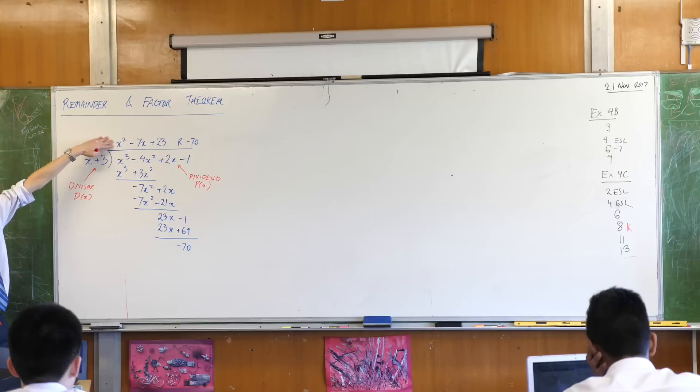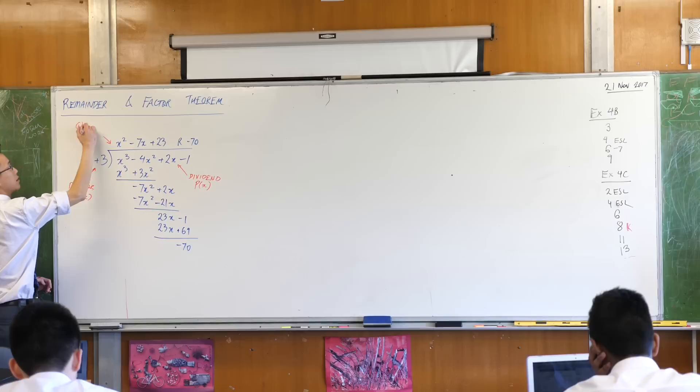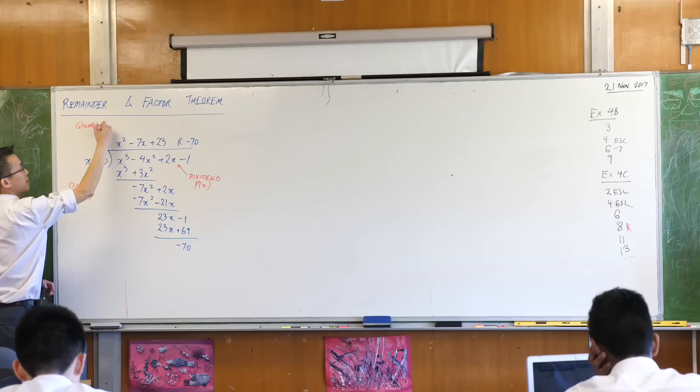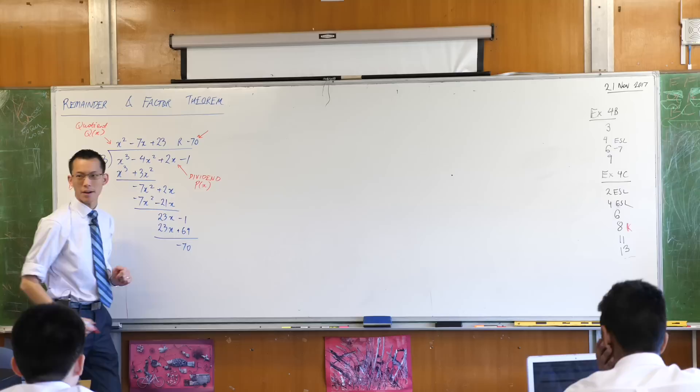What you get left with at the top is your answer which is comprised of two components. There's this part over here which starts with a Q, it's the quotient, so I guess we can call that Q of X, and that leaves the final piece, the remainder.